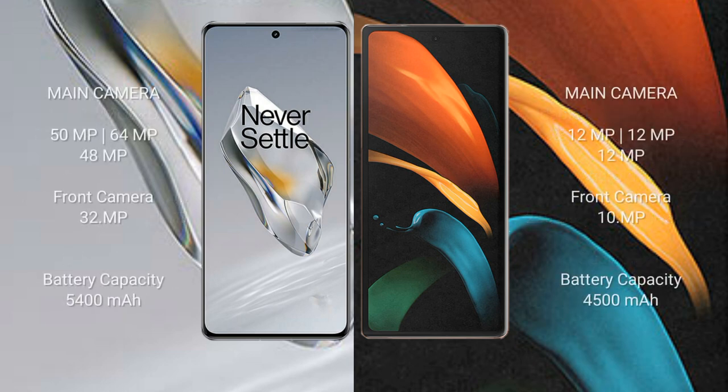OnePlus 12 features a rear triple camera setup of 50MP plus 64MP plus 48MP, and a front camera of 32MP. Samsung Galaxy Z Fold 2 features a rear triple camera setup of 12MP plus 12MP plus 12MP, and a front camera of 13MP.